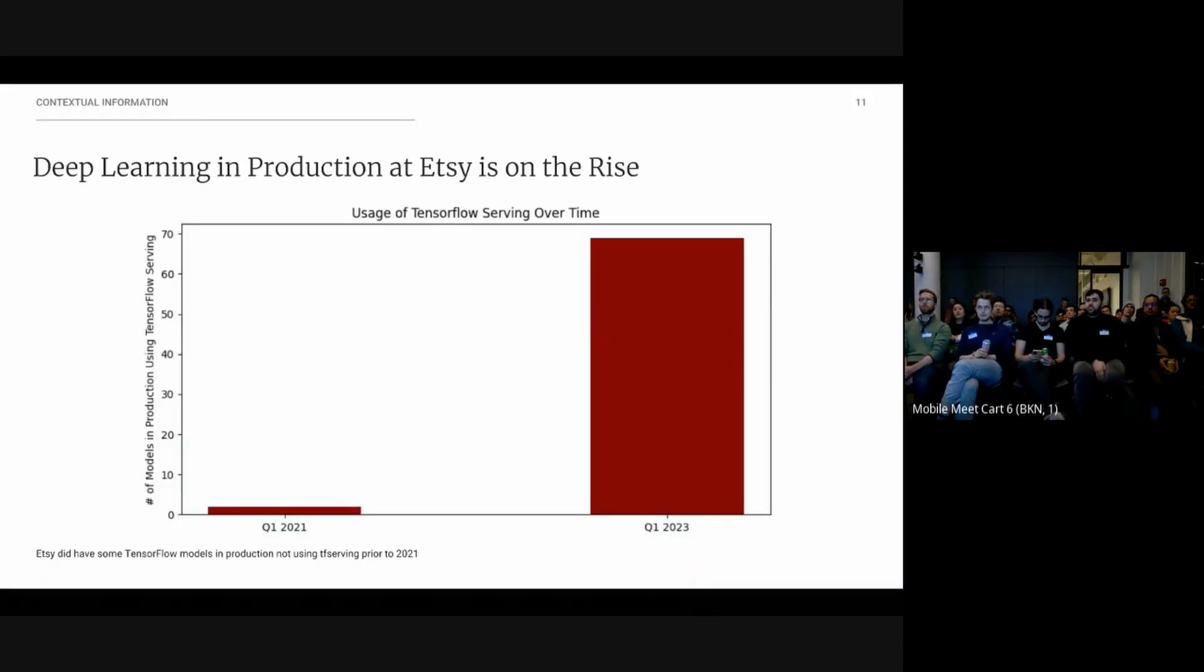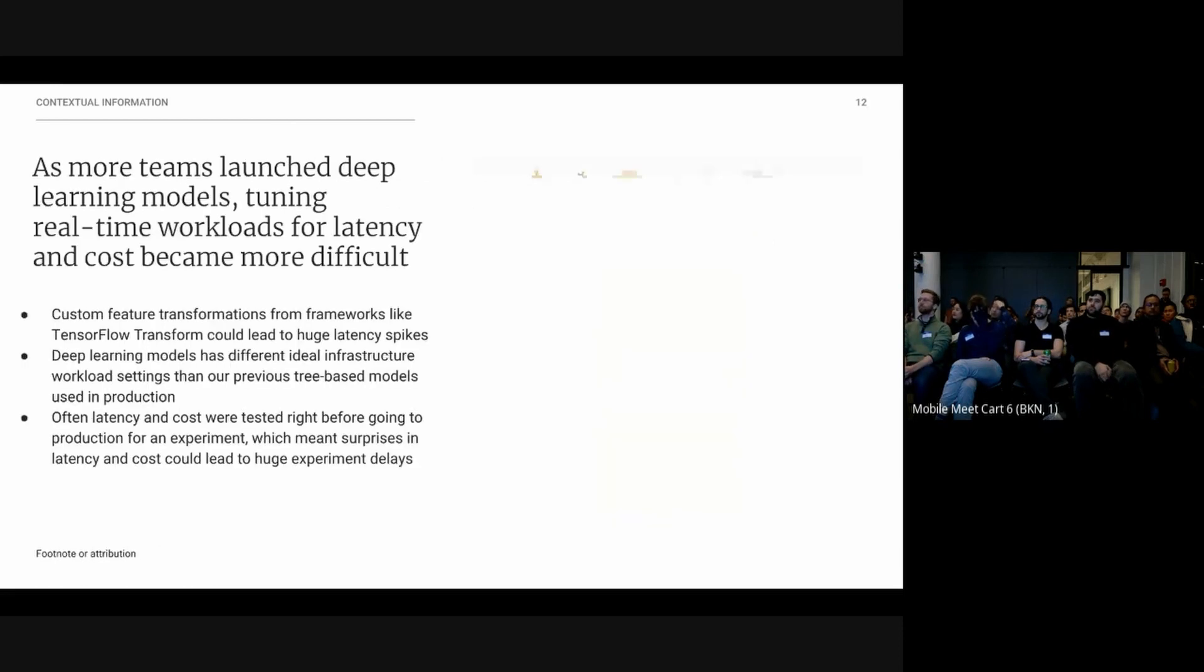So this is an absolutely terrible graph that I made really quick in matplotlib. But the point here is that in Q1 of 2021, we had two models using TensorFlow serving. Alaa, one of our speakers today, will be talking about those a little bit later. Now we have almost 70 models in our production environment in our Kubernetes cluster using TensorFlow serving. Almost all active development is done using deep learning libraries and deployed. So this is throwing a host of new challenges at us when it comes to scaling these models and managing these things in production.